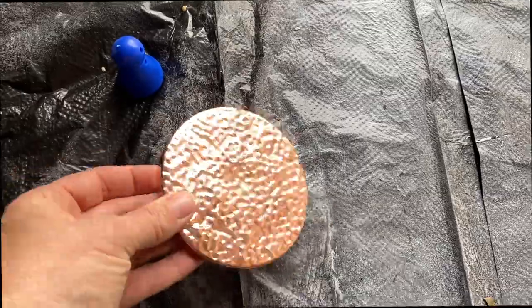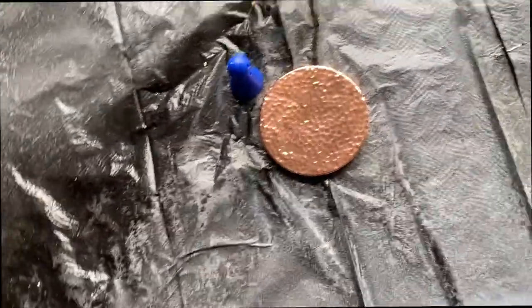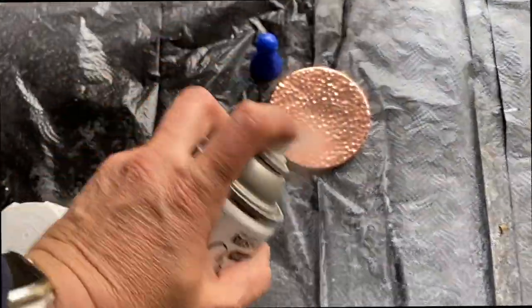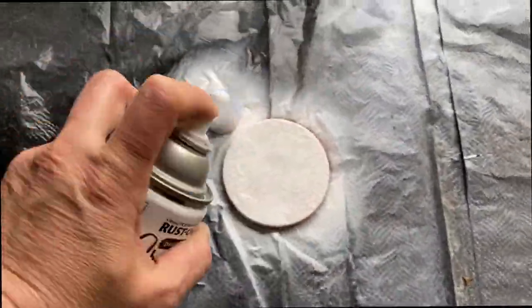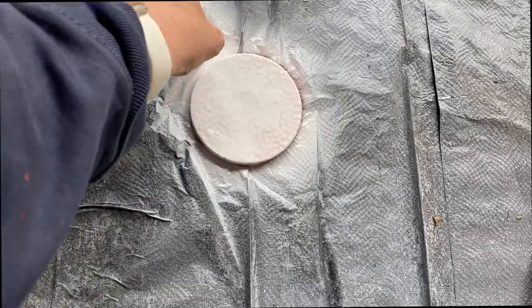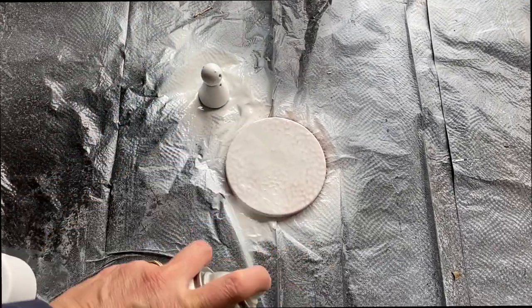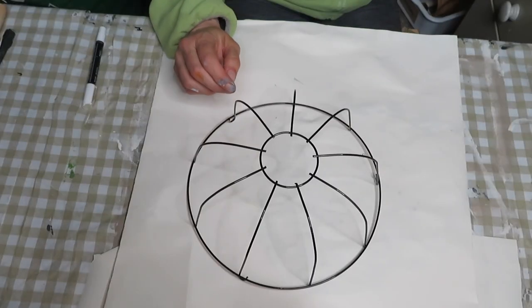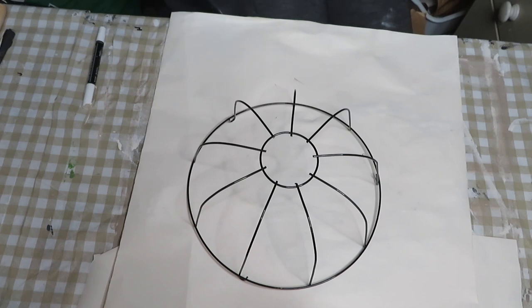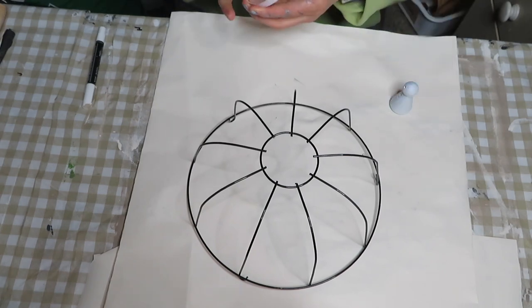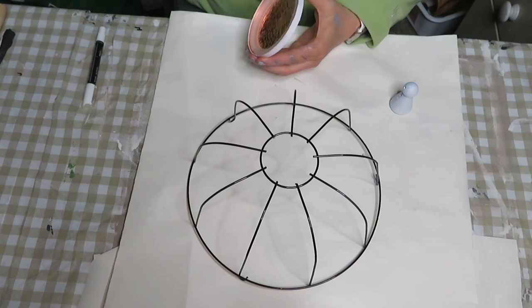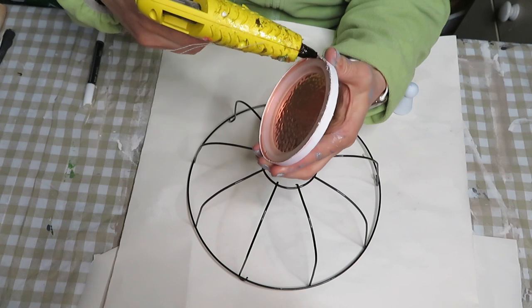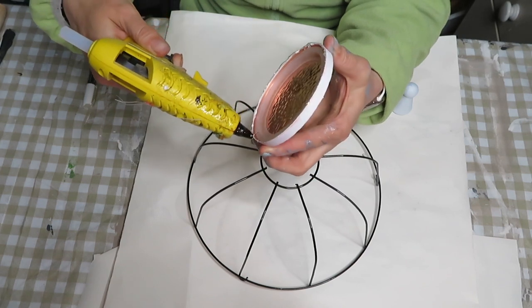I am using a lid from Bath and Body Works candle as well as a little person I think it's a bead. I've had it in my craft stash and I spray paint that with white chalk paint. Once that had completely dried I brought it inside and I created a top with it by hot gluing the lid first and then the little person bead on top of the lid. And this just created a little tip for the top.